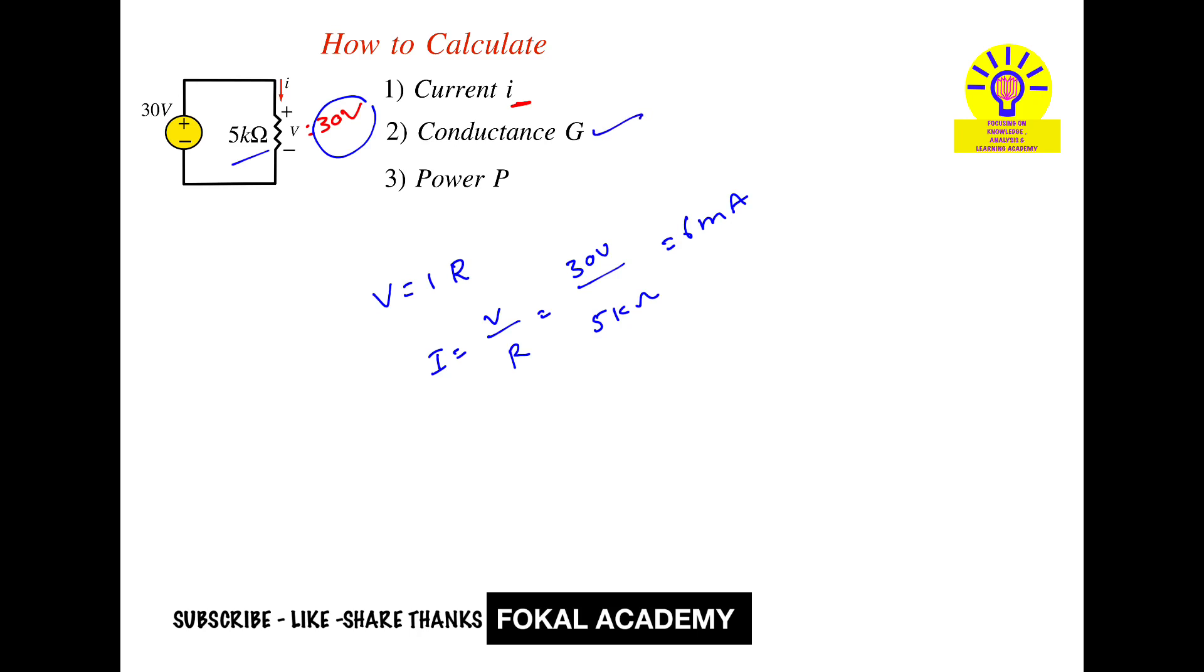Next, we want the conductance G. Conductance is inversely proportional to resistance. Your resistance is 5 kilo ohms, so that's equal to 1 by 5 into 10 cube. By simplifying this, we get 0.2 millisiemens, and the unit of conductance is siemens.